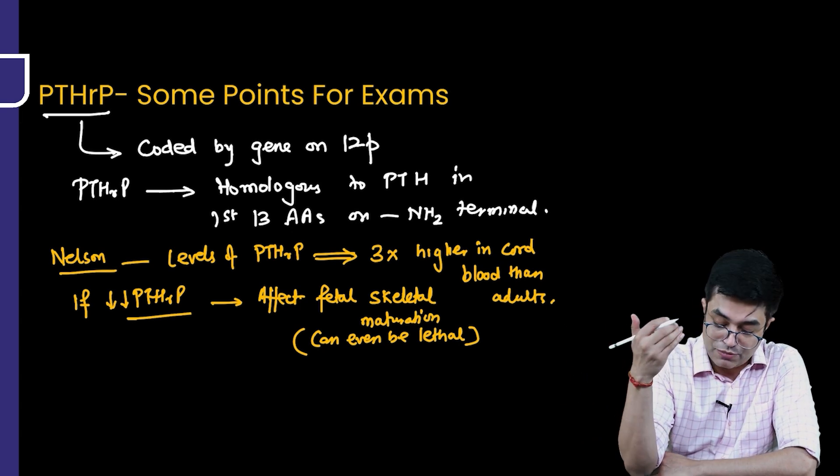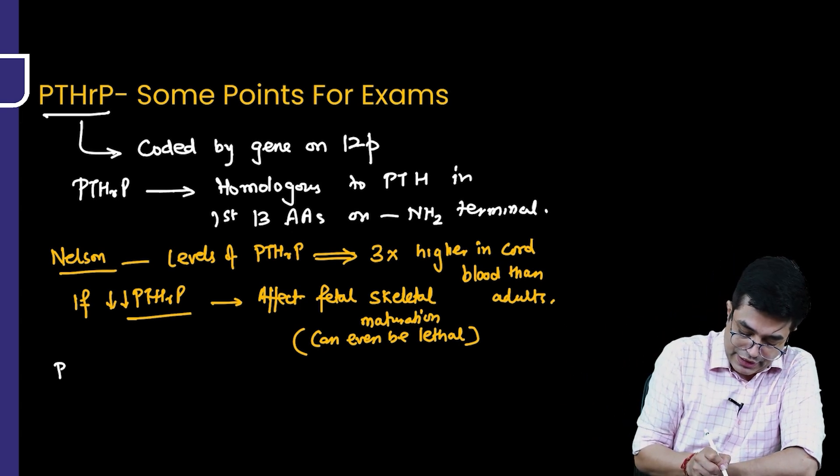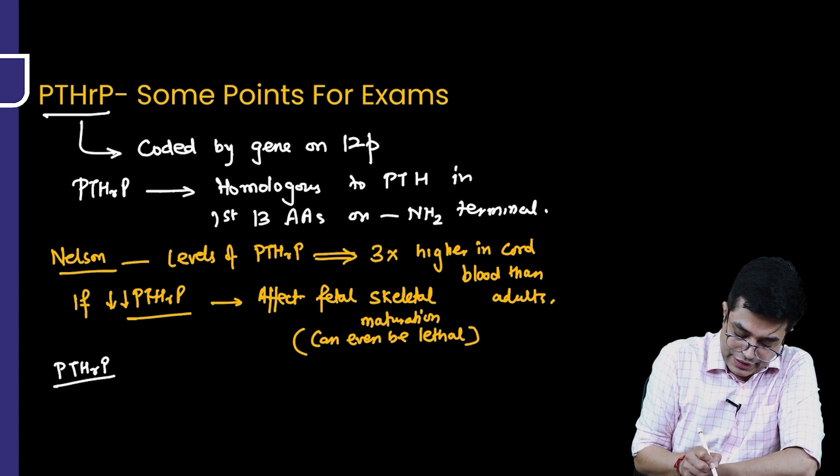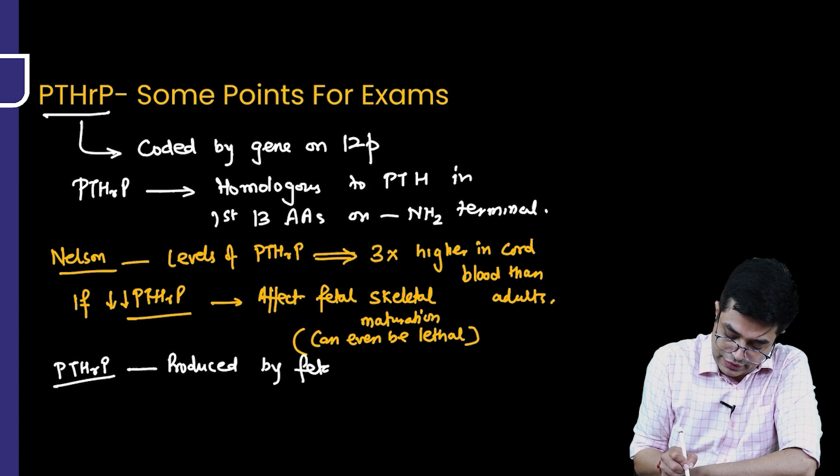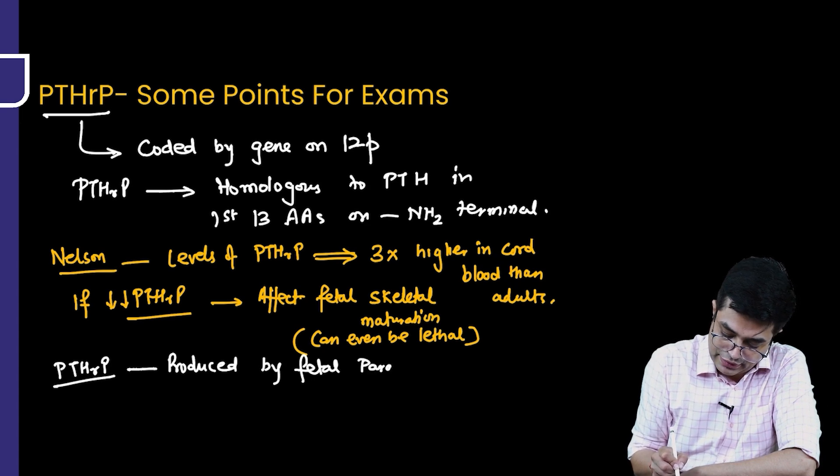And the question can be asked what produces PTHRP? PTHRP is endogenously produced. PTHRP is produced by the fetal parathyroid gland. So these are some of the points that you should remember.